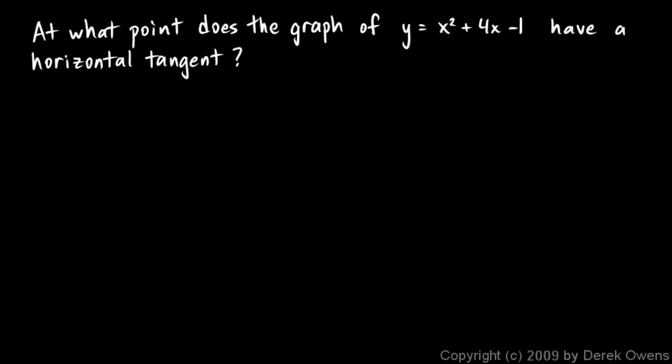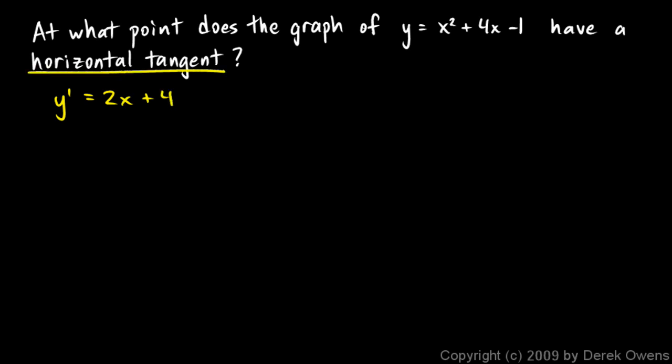Here's another example: at what point does the graph of y equals x squared plus 4x minus 1 have a horizontal tangent? Let's take the derivative of this function, since we need to deal with the slope of the tangent line. y prime is going to be 2x plus 4. If we want the tangent line to be horizontal, horizontal means it has a slope of 0.